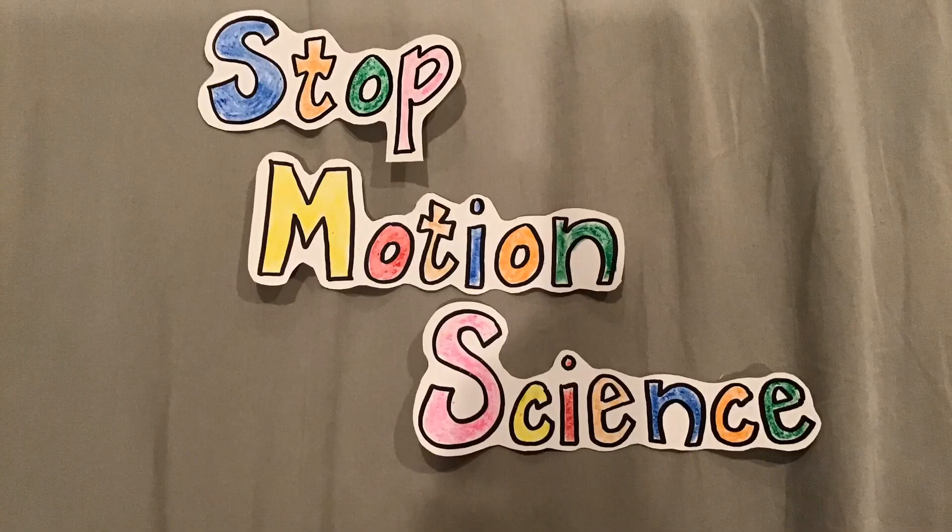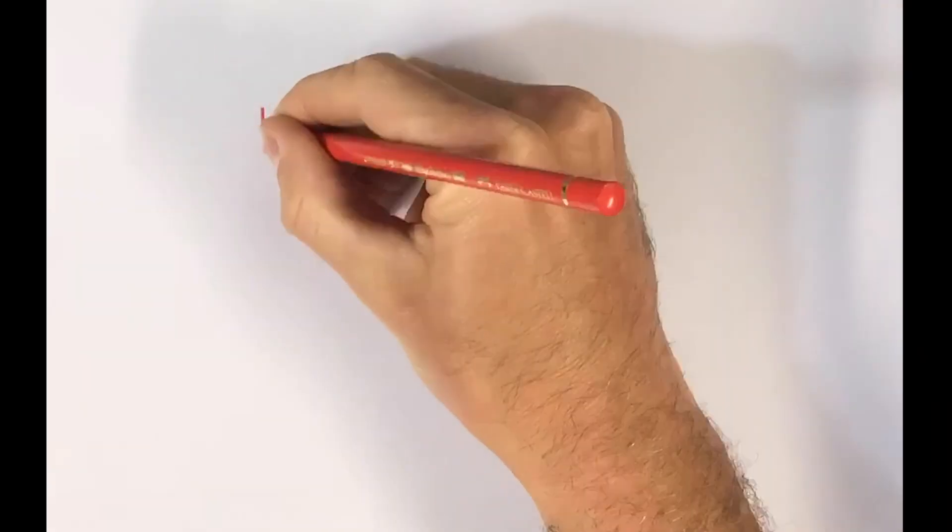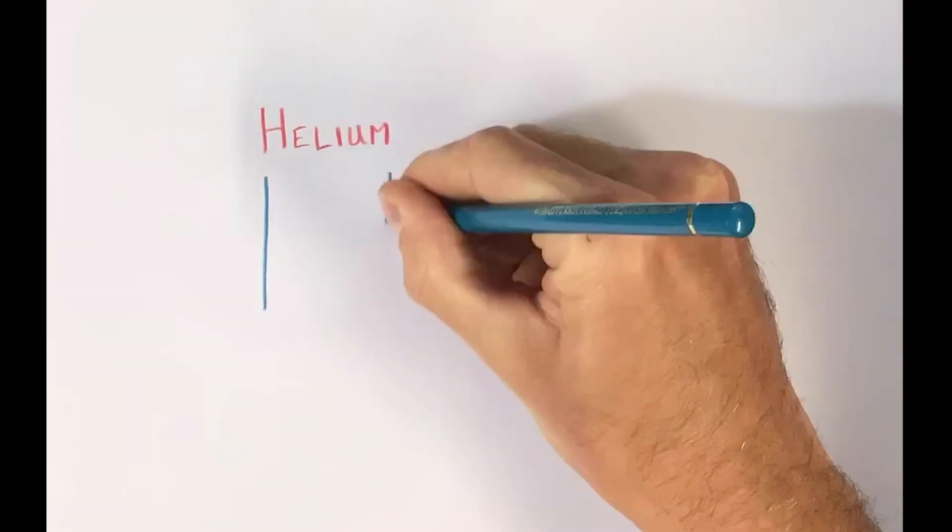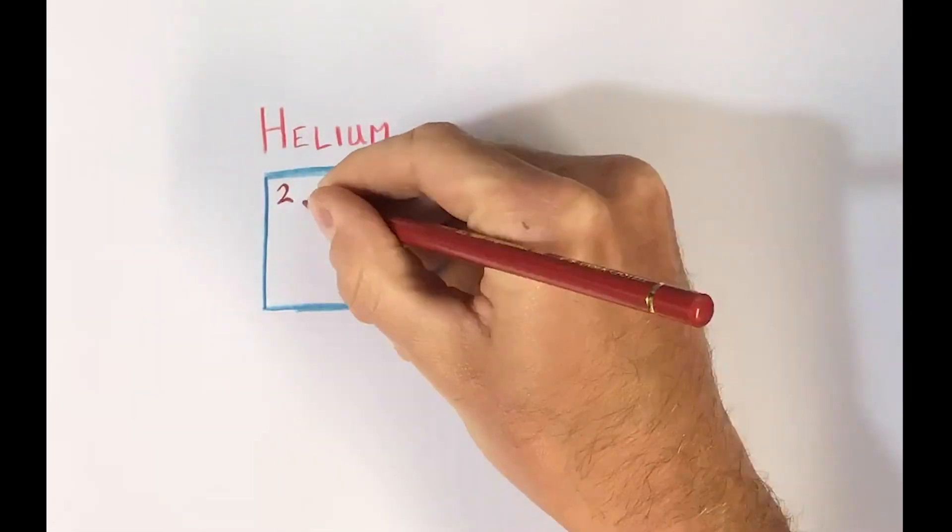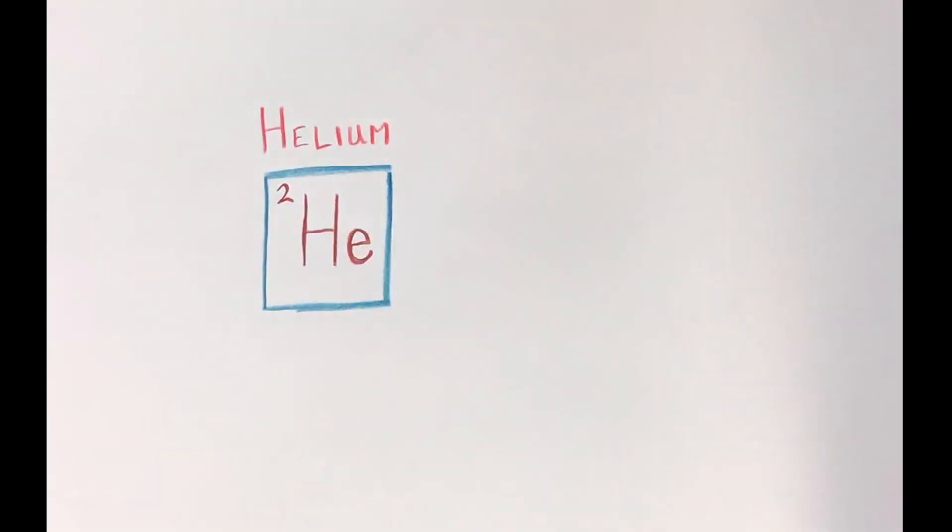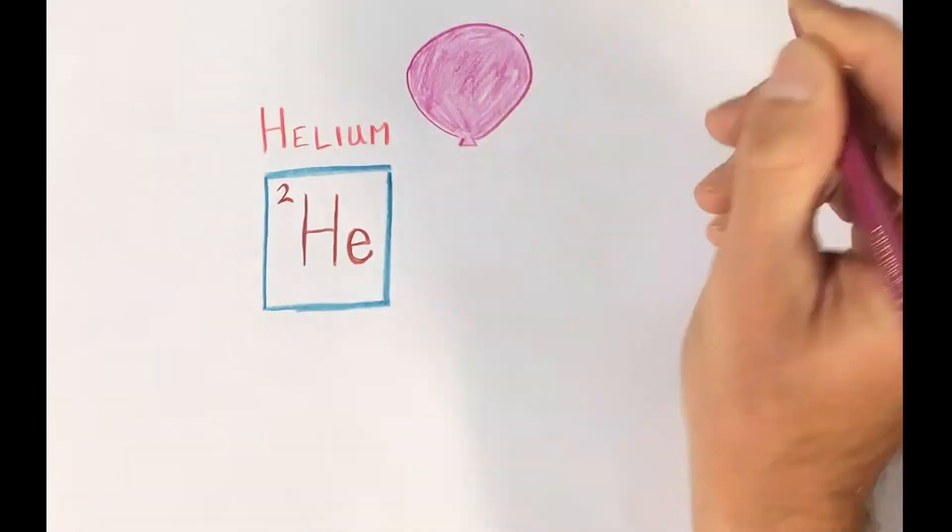Star motion science! Before we even get to the acid-base reaction, we have to take a look at the atom. And what makes an atom special or an element unique is the amount of protons, neutrons, and electrons it's made of.